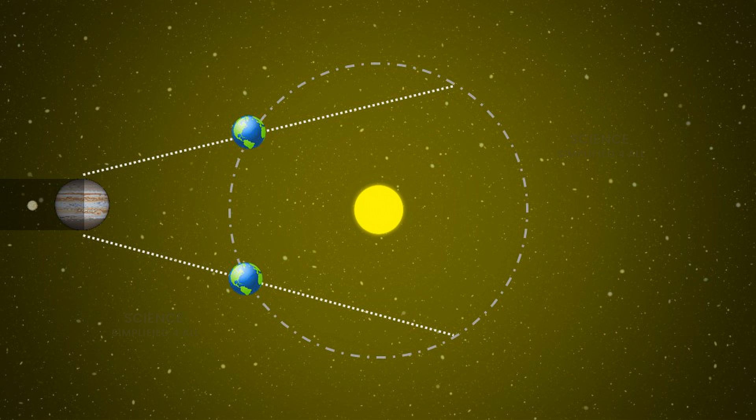When Earth was closer to Jupiter in its orbit, the eclipses happened slightly earlier than expected. Conversely, when Earth was farther away, the eclipses occurred later. After careful analysis, Römer realized that this timing difference was not due to variations in Io's orbit. Instead, it was caused by the time it took for light from Io to reach Earth. In other words, when Earth was closer to Jupiter, the light had a shorter distance to travel, so it reached us faster. When Earth was farther away, the light had a longer journey, causing a delay.